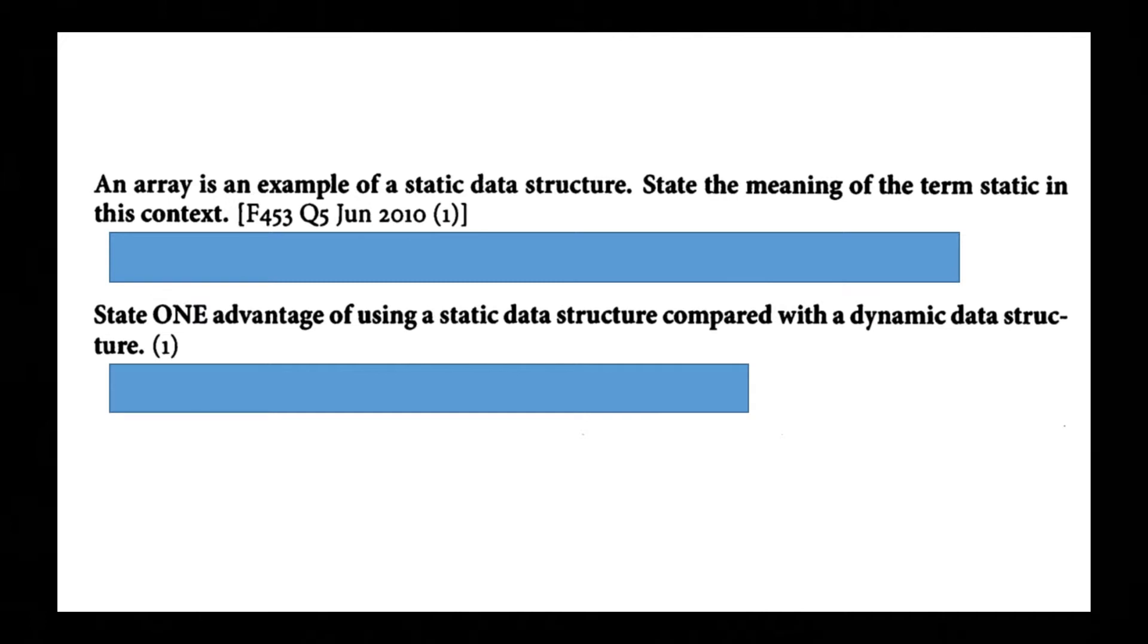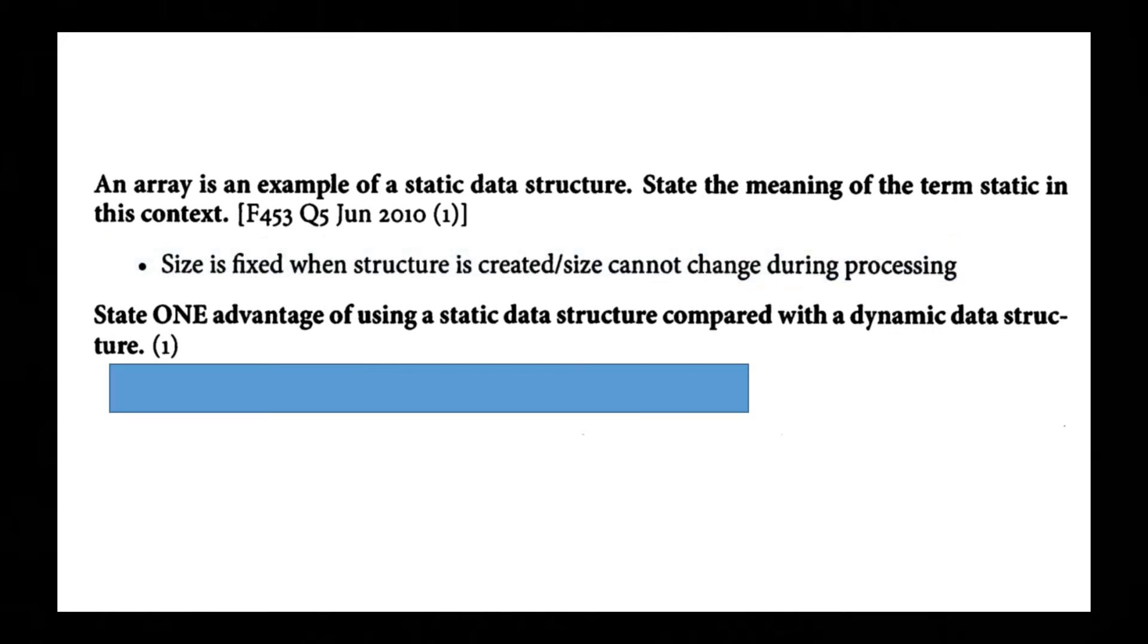An array is an example of a static data structure. State the meaning of the term static in this context. Size is fixed when structure is created so the size cannot change during processing.